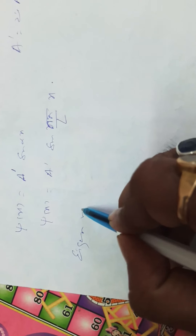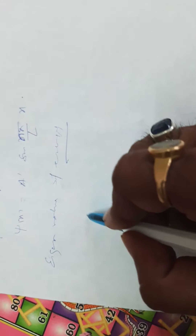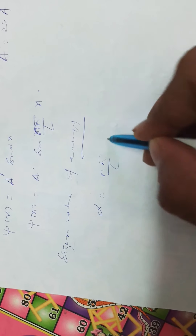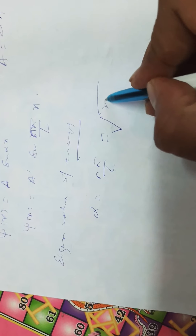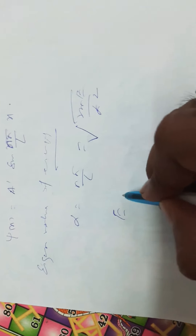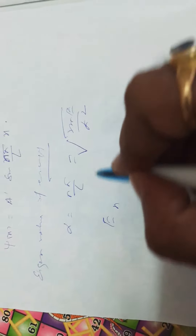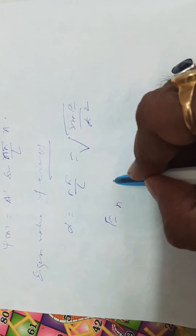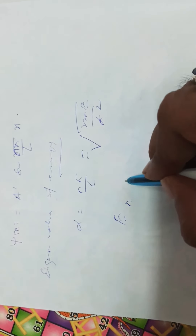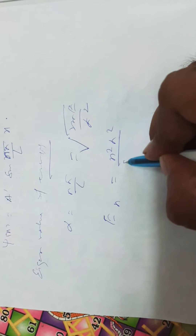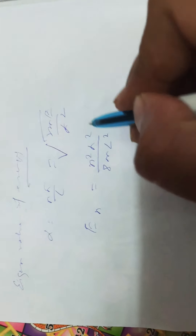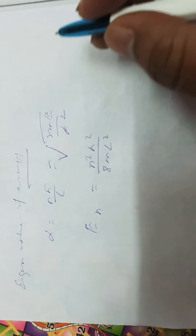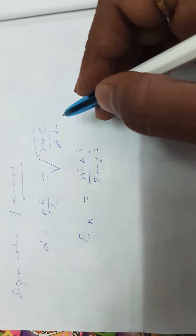Now finding the energy eigenvalues: we know α equals nπ/l, which also equals √(2mE)/ℏ. Solving this gives the energy eigenvalue En equal to n²h²/(8ml²).